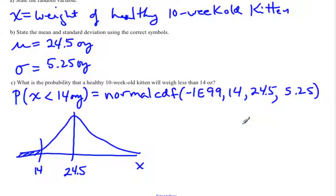And once you type all that into your calculator, you will then get a probability value of 0.0228, rounded to four decimal places. So that's the probability that a healthy kitten weighs less than 14 ounces.